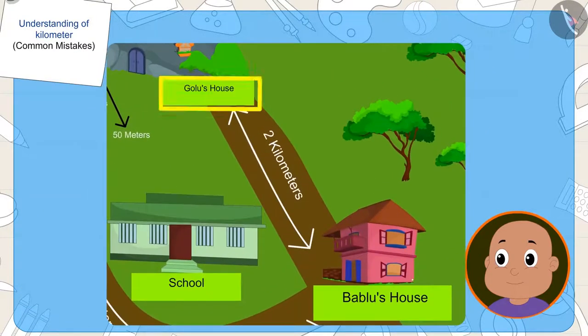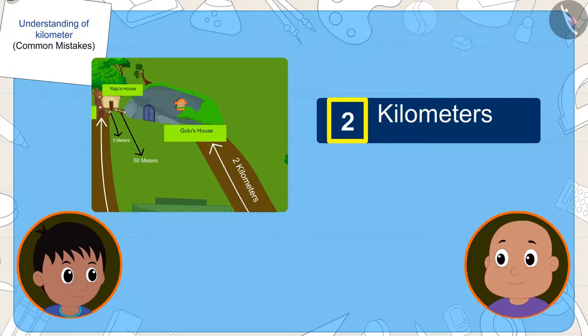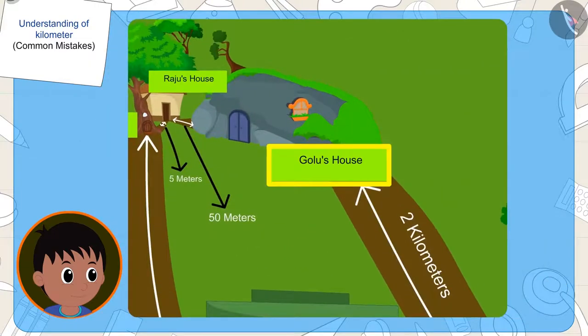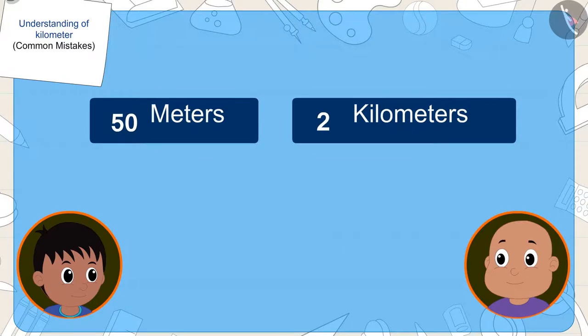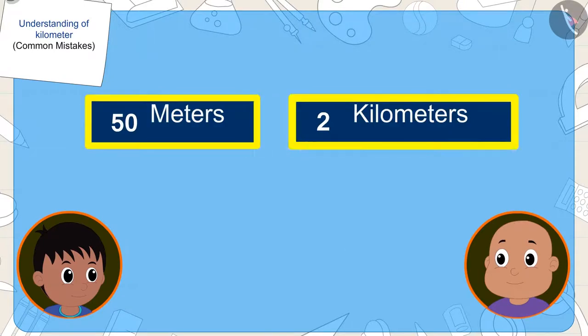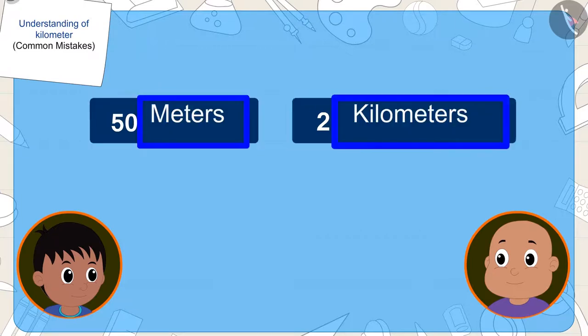This time, the number in the distance from Golu's house to Bablu's house, two, is lesser than the number in the distances from Golu's house to Raju's house, that is, 50. But once again, Bablu did not pay attention to their units when comparing the distances.